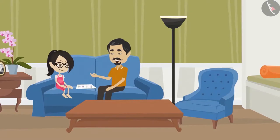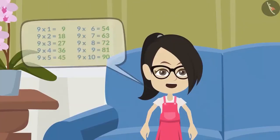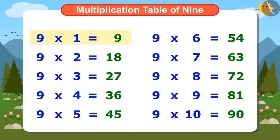Now learn the table of 9 so that you do not have to write it again and again. Let us learn by singing the multiplication table of 9. 9 ones are 9, 9 twos are 18, 9 threes are 27, 9 fours are 36, 9 fives are 45, 9 six are 54, 9 sevens are 63, 9 eights are 72, 9 nines are 81, 9 tens are 90.